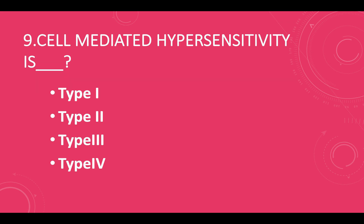Cell-mediated hypersensitivity is: option A — type 1, option B — type 2, option C — type 3, option D — type 4. Answer: option D, type 4.